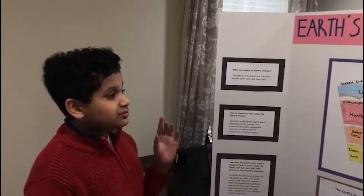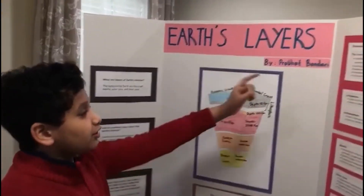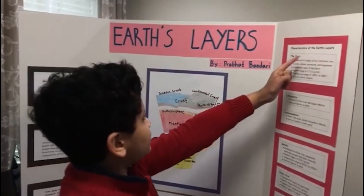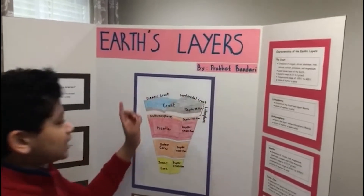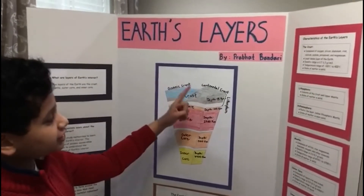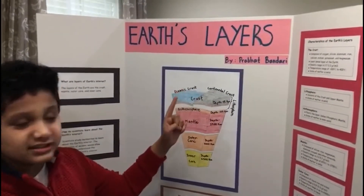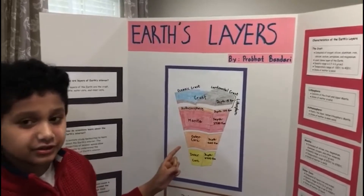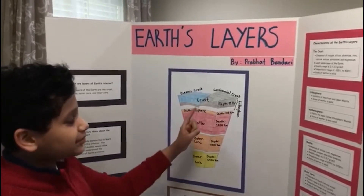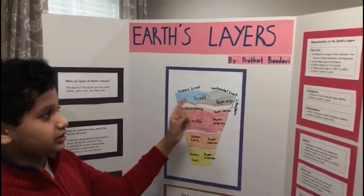Now let's move on to the characteristics of the Earth's layers. The crust. There are two types of crust: oceanic crust and continental crust. The crust is the least dense layer of the Earth, with a depth of approximately 15 kilometers.